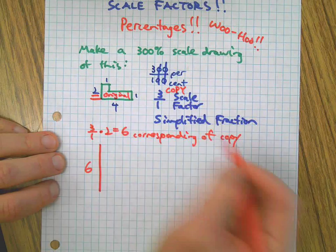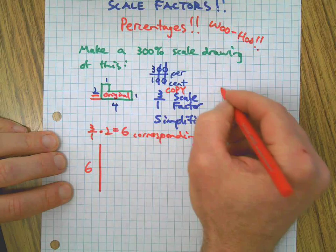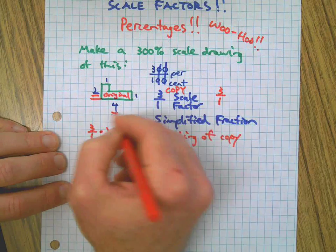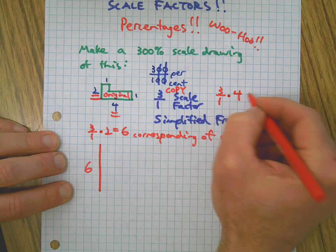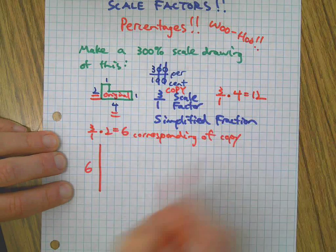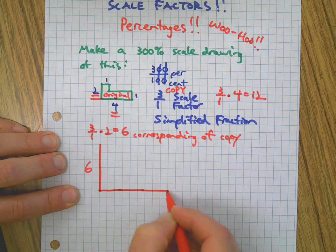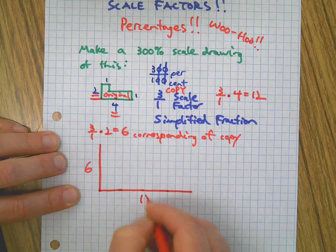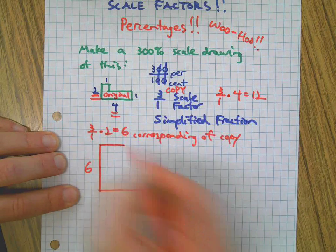Now obviously we can do all this in our head. I know that four times three is twelve, but we want to practice taking the scale factor, multiply it by a known side of the original. Twelve, that's going to be the corresponding side of the copy. So the one is going to be a three.